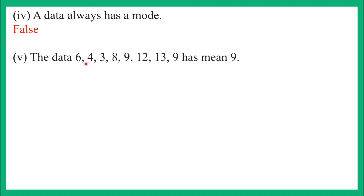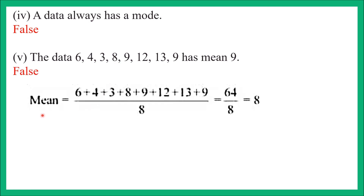Part 5: The data 6, 4, 3, 8, 9, 12, 13, 9 has mean 9. To check this statement, we calculate the mean: mean = sum of observations ÷ number of observations. Adding all observations gives 64, and 64 ÷ 8 = 8. So the mean of this data is 8, but the question states 9. Therefore this statement is false.